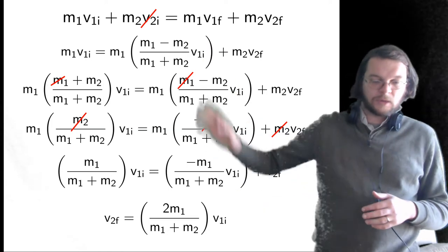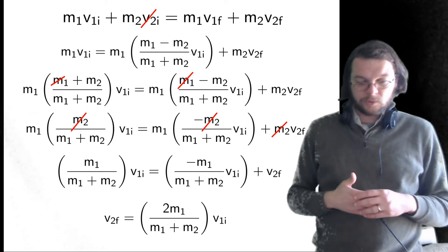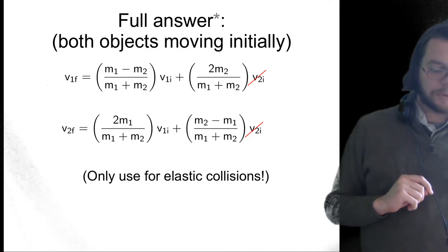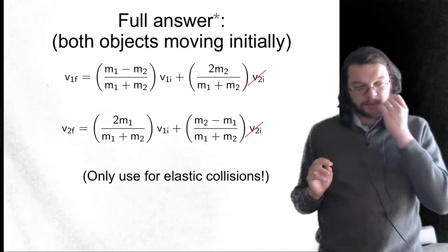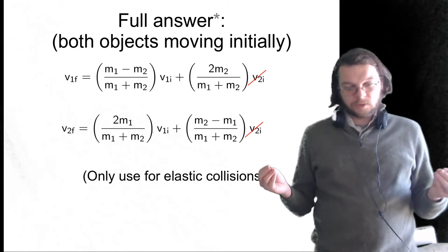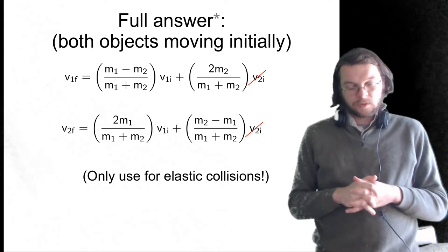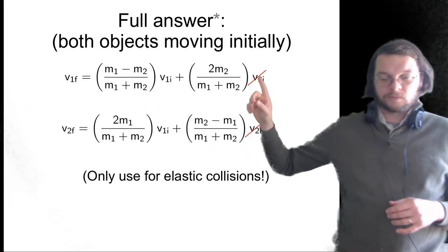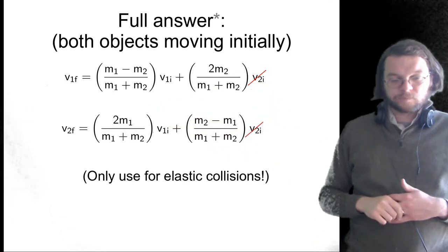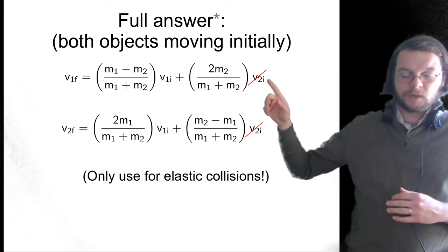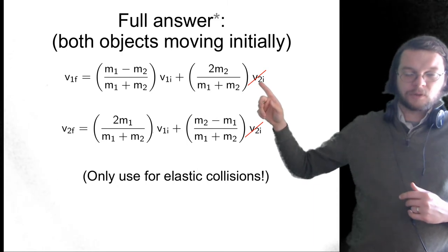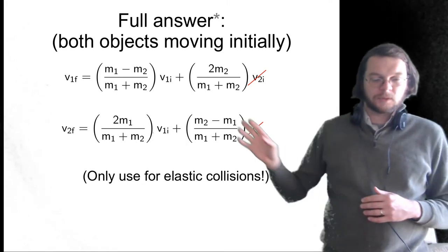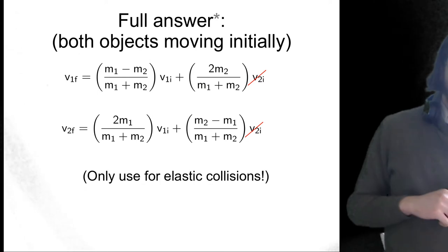I will not make you derive these on the exam, but I feel it's important to show you where they come from so you realize what's going into them. The full answer — if both objects are moving — would include an additional V2I term. What I've really done is set the initial speed of object two to zero, which eliminates that term and gives you the simplified equations shown in the textbook.